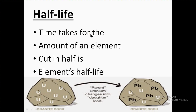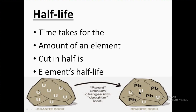Half Life: the time it takes for the amount of an element to be cut in half is called the element's half life. For example, uranium is a radioactive element that converts into lead (Pb). 50 percent of the uranium converts into lead over its half life period. So uranium, after its half life, converts 50 percent into lead.